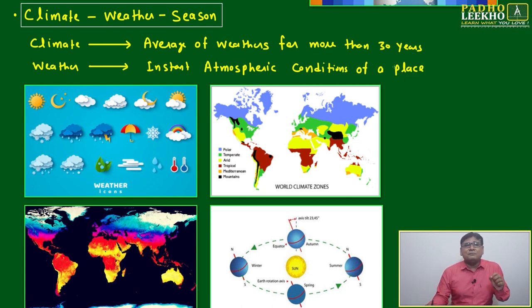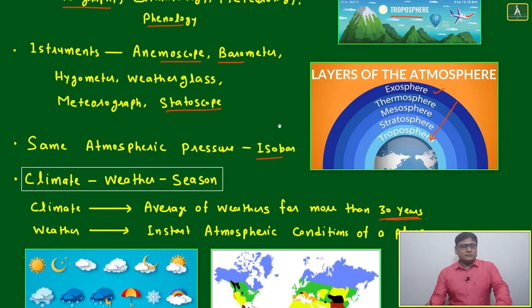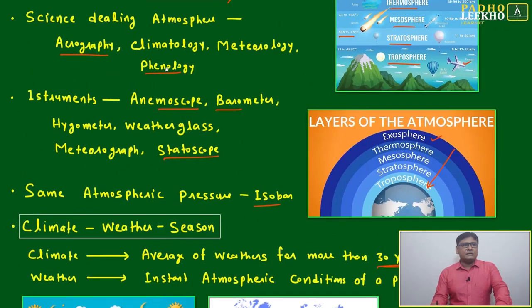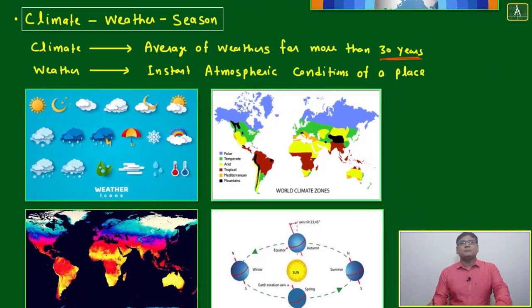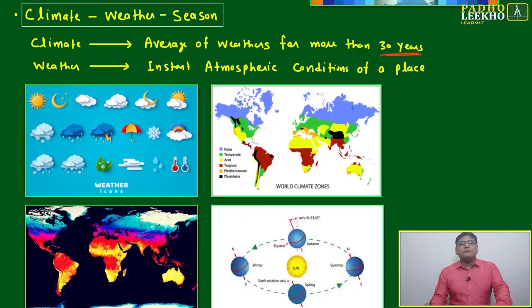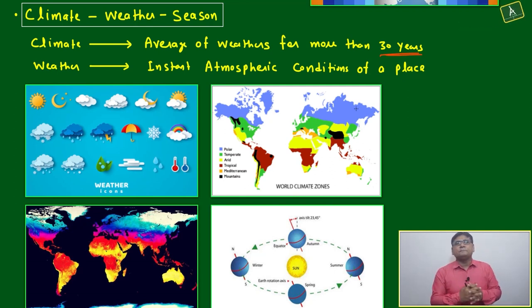Climate is the average of the weather for more than 30 years for any particular geographical location, state, or area. Climatologists and meteorologists measure the last minimum 30 years of weather conditions, make an average of that, and decide what type of climate a region has.